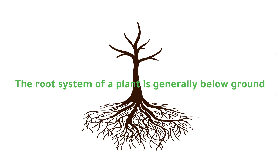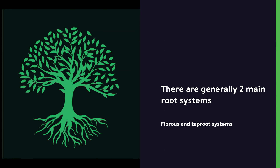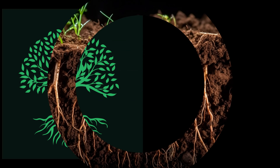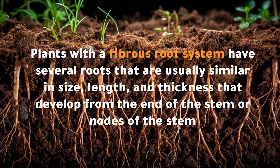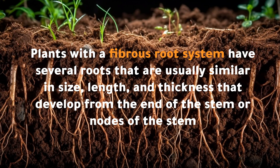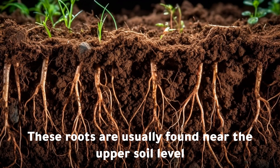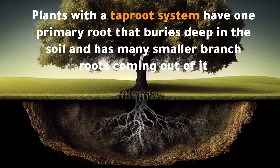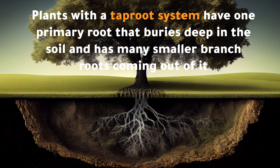The root system of a plant is generally below ground. Roots anchor the plant in the ground and absorb water, nutrients, and minerals. There are generally two main root systems: fibrous and taproot. Plants with a fibrous root system have several roots usually similar in size, length, and thickness that develop from the end or nodes of the stem, usually found near the upper soil level. Plants with a taproot system have one primary root that buries deep in the soil with many smaller branch roots.